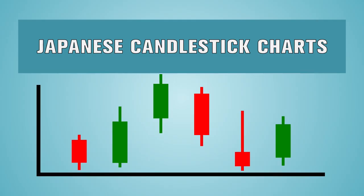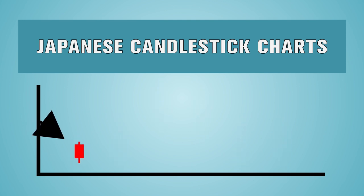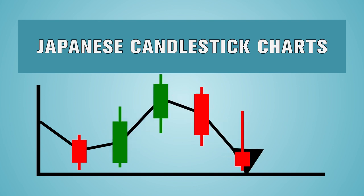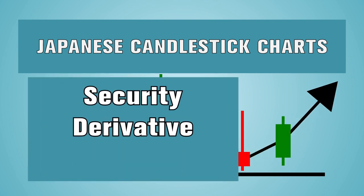In this video, we will explain to you how to read a Japanese candlestick chart. A candlestick chart is a style of financial chart used to describe price movements of a security, derivative, or currency.